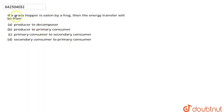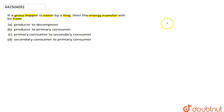If we talk about this question, we're asked that if a grasshopper is eaten by a frog, then the energy transfer will be from — so basically, if we talk about the transfer of energy or the flow of energy, we need to determine the direction.